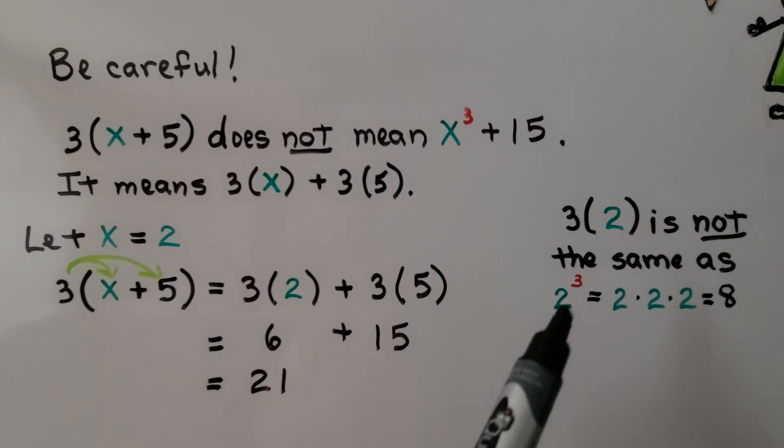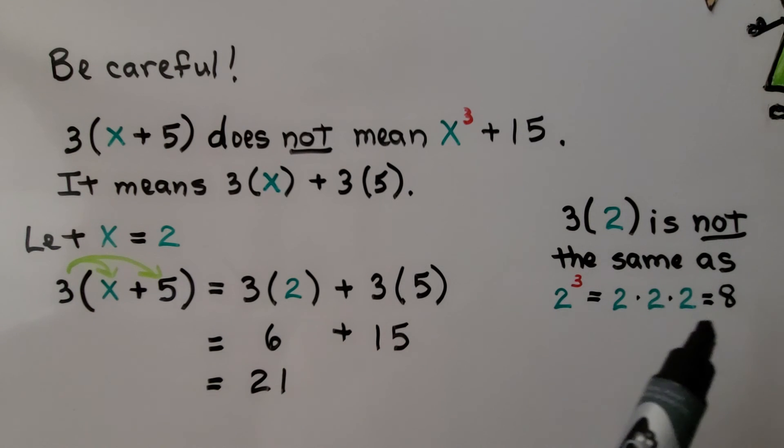If we did two raised to the third power, thinking this was x raised to the third power, we'd have two times two times two. That's eight. That's not six. So be very careful.